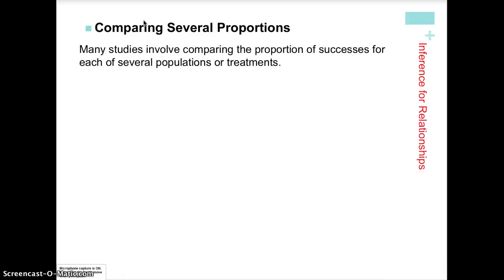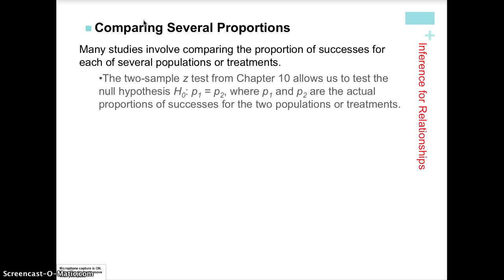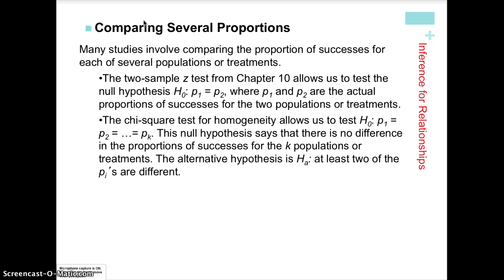There have been studies that compared proportions of successes two at a time — that's what we looked at in Chapter 10, where the null hypothesis was p1 equals p2, or p1 minus p2 equals zero. Both statements mean the same thing. The chi-square test for homogeneity allows us to test multiple proportions all being equal to each other. The null hypothesis says there's no difference in the proportions for all the different treatments or groups.